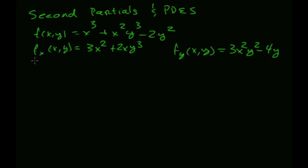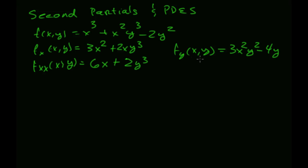I can take a second partial of x with respect to x, and that is going to give me 6x plus 2y cubed. And I can also do a second partial of x with respect to y — the f_xy — and that washes out to give me 6xy squared.